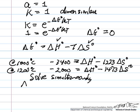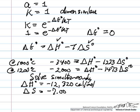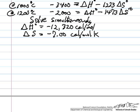And we can calculate ΔH° as -12,320 calories per mole, and ΔS° as -7.00 calories per mole Kelvin. So we are looking for the temperature where ΔG° is zero.